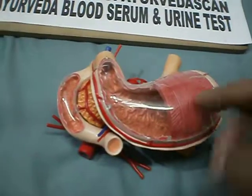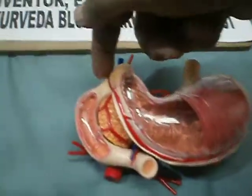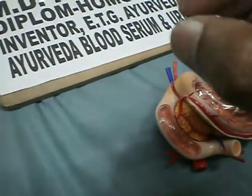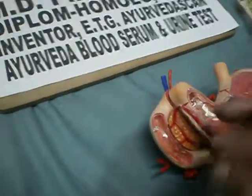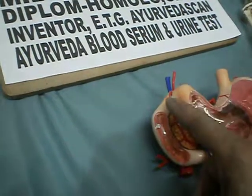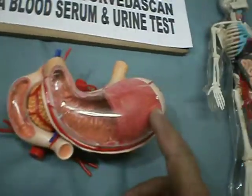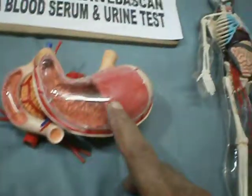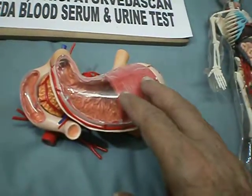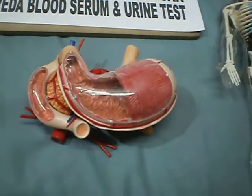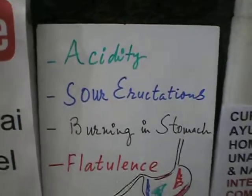There is a valve here that is closed when the chyme process is going on. It closes and then opens when the stomach confirms that the pH is okay and there is not too much acidity. Acidity can harm the intestine — otherwise, to protect the intestine, there will be diarrhea and whatever food was taken will be expelled. When the level of acidity in the stomach increases, acidity, sour eructations, burning in the stomach, and flatulence symptoms occur.